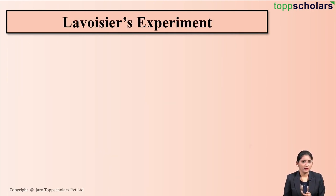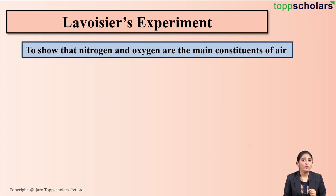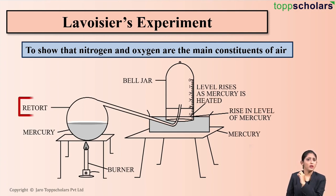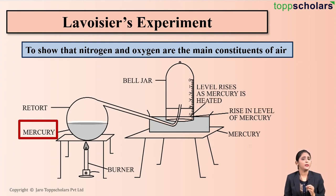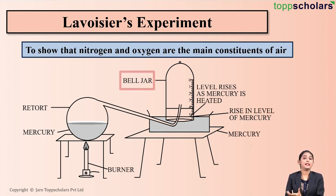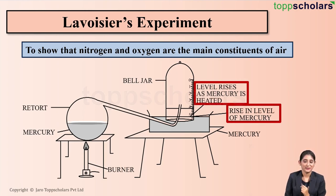In order to prove that air is a mixture of gases, a scientist named Antoine Lavoisier in the year 1774 carried out an experiment known as Lavoisier's experiment. He simply proved that nitrogen and oxygen are the main constituents of air. He took a retort with some amount of mercury and heated the mercury in the retort. The other end of the retort enters into a bell jar placed in a container filled with mercury. Lavoisier observed that on heating the mercury, the level of mercury in the bell jar rises.